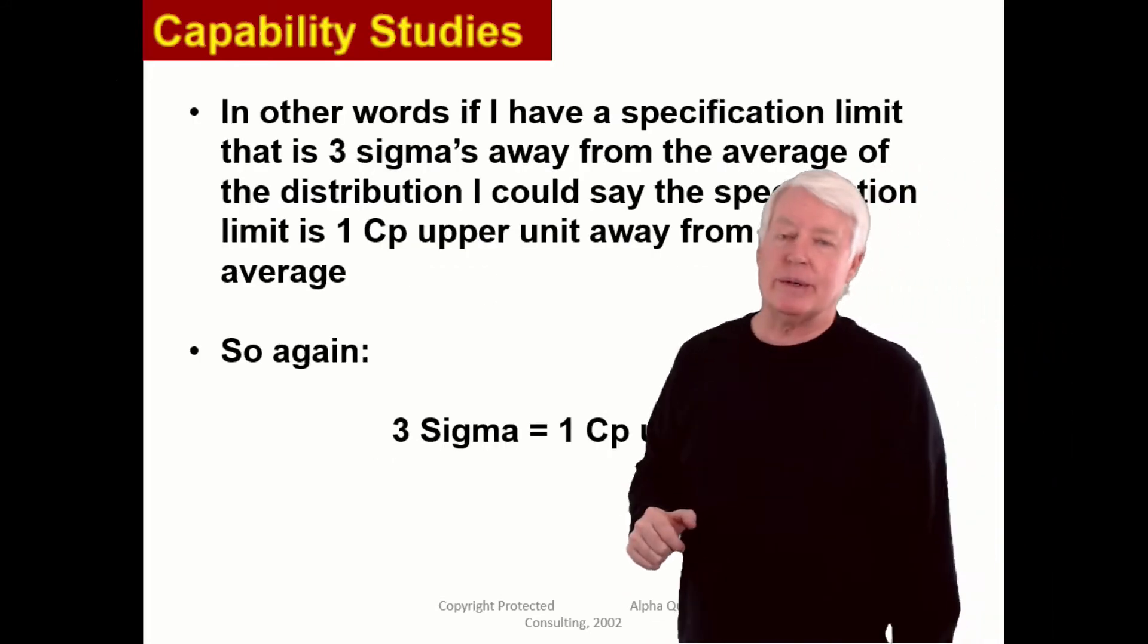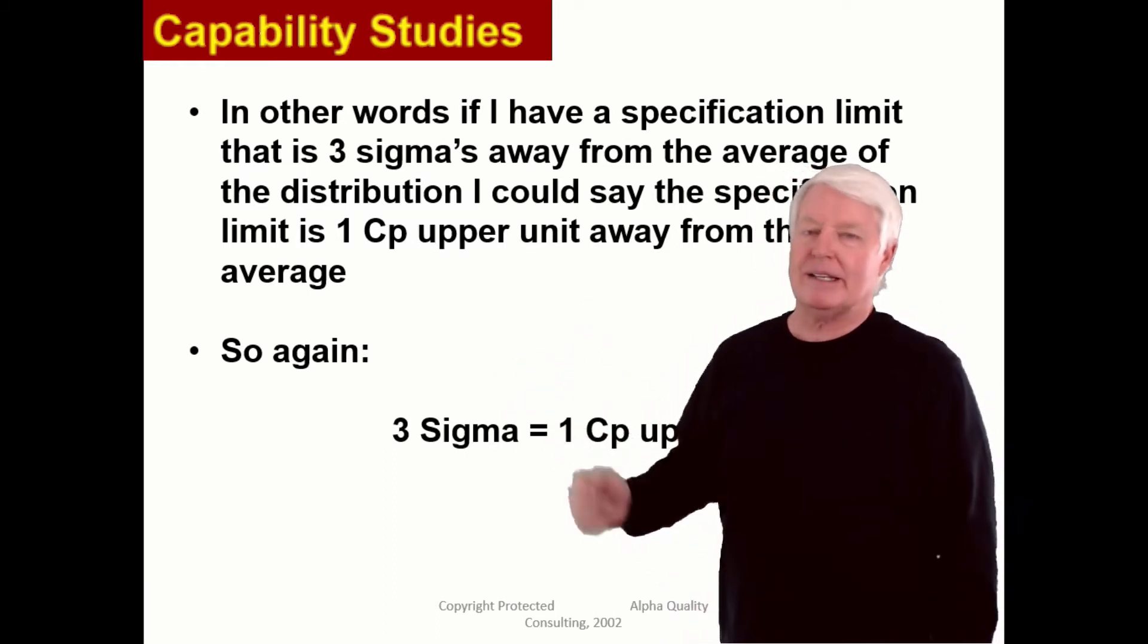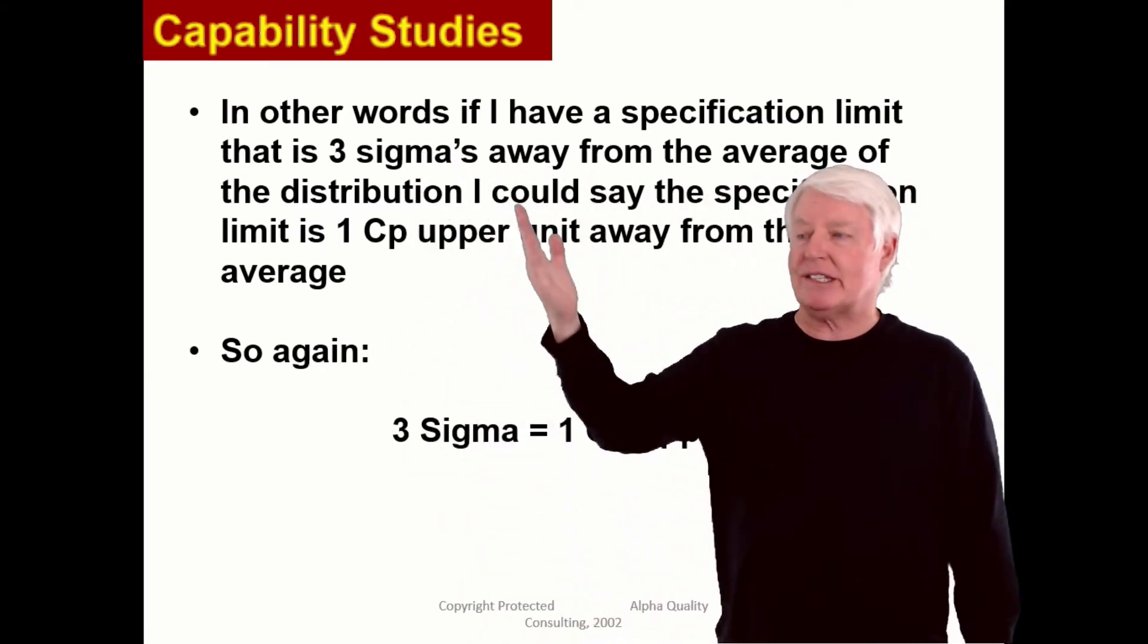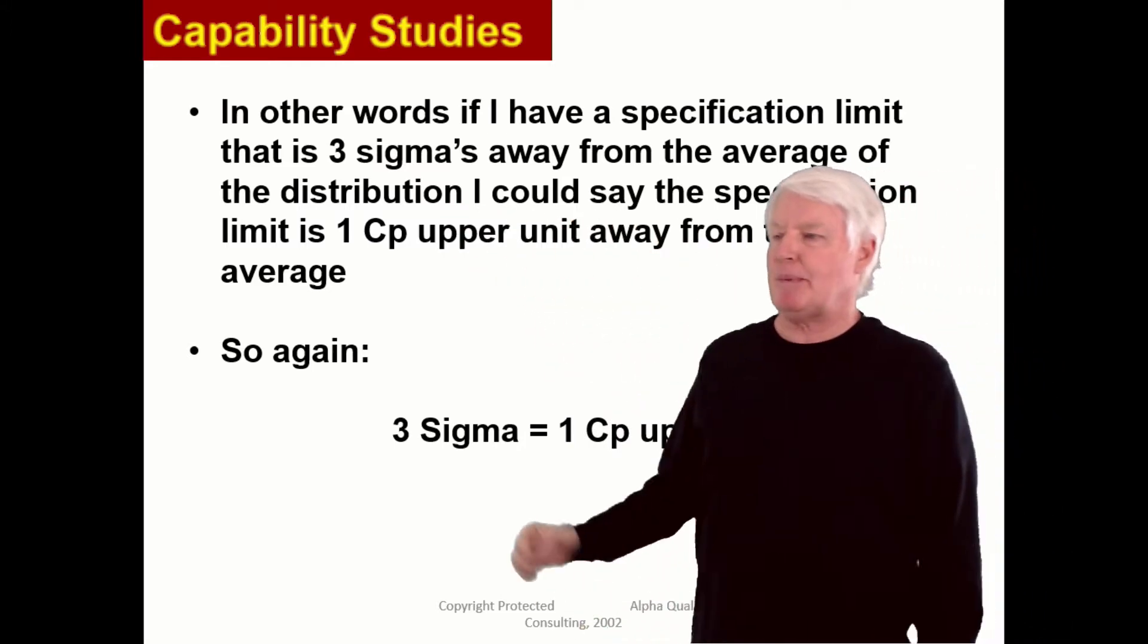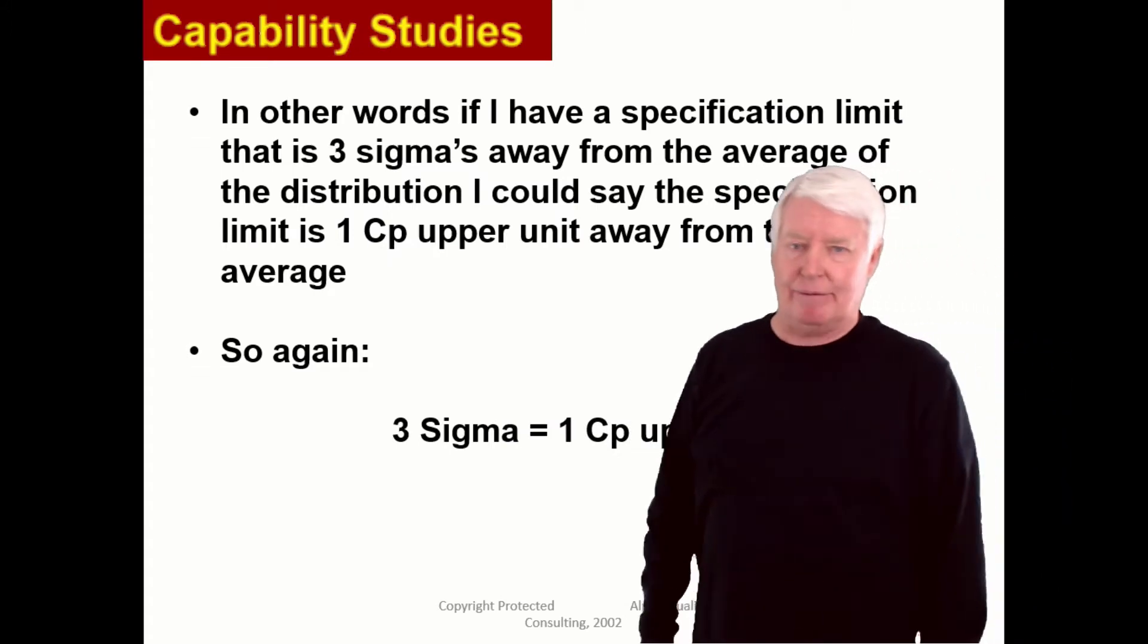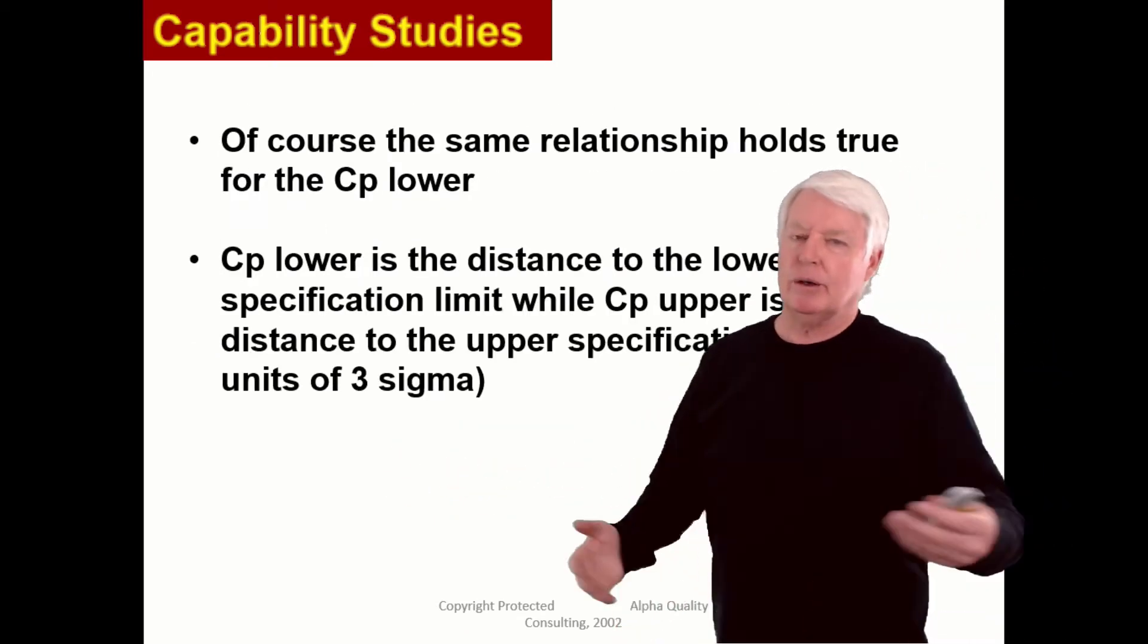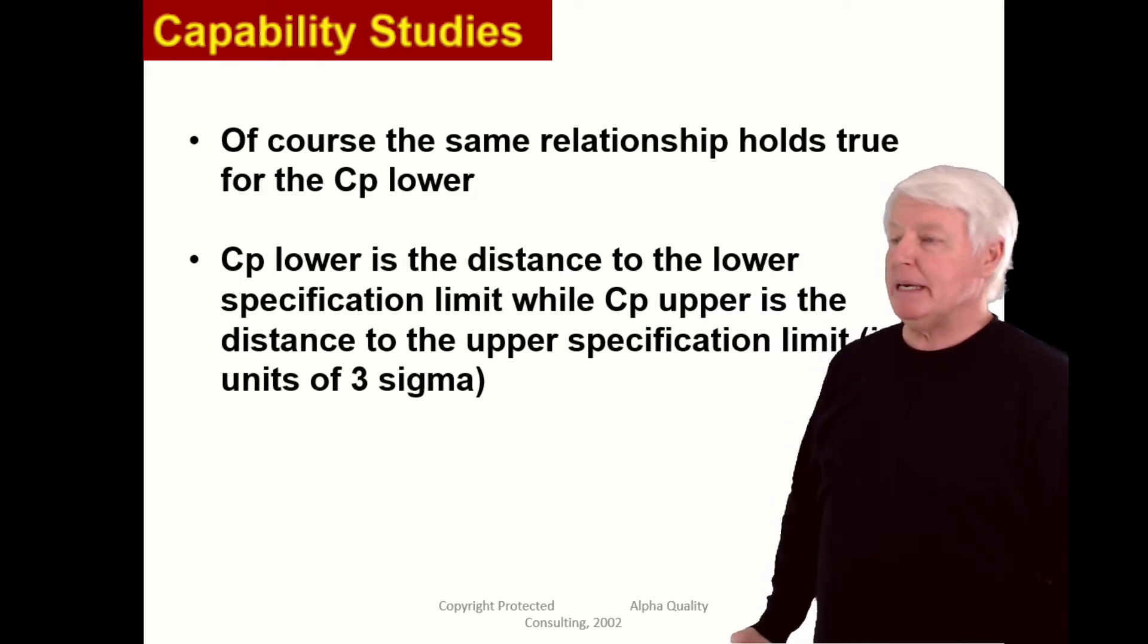They decide to measure in three sigma units. I know a lot of people measure in sigma units, but in CPK, we measure in three sigma units. In other words, if I have a specification limit that is three sigmas away from the average of the distribution, I could say the specification is one CP upper unit away from the average. Remember, three sigma equals one CP upper or lower or whatever CP unit you're looking at from the CPK family.